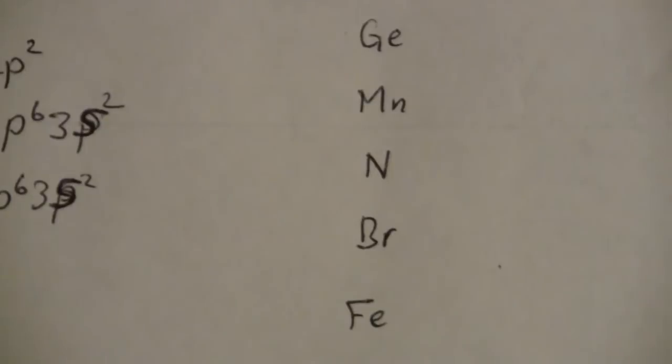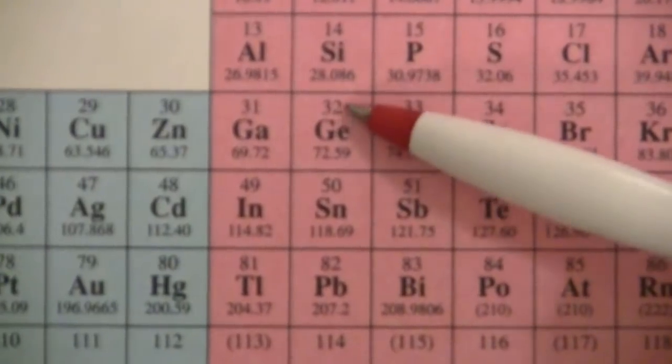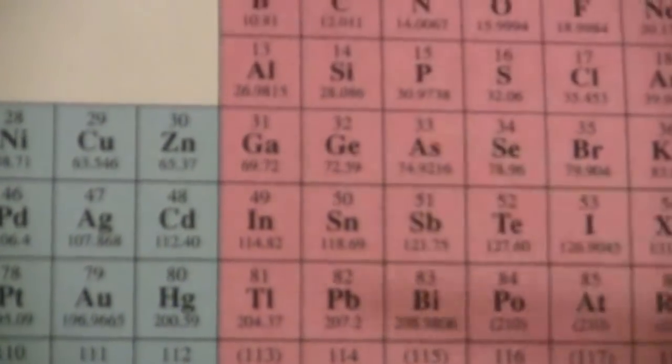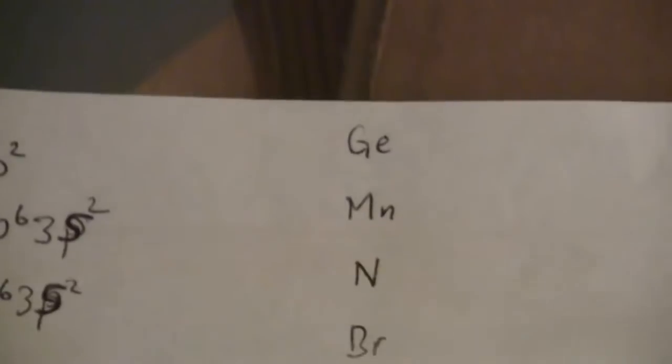So I have those written here and I'm going to use the periodic table here as a reference. The first element is germanium and germanium is number 32 and that means we have 32 electrons. The easiest way to do these kind of problems is to simply follow the periodic table.